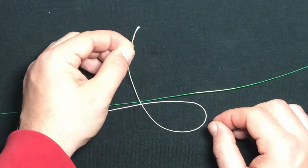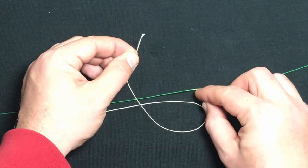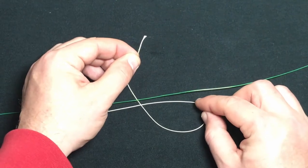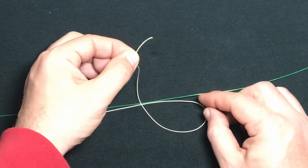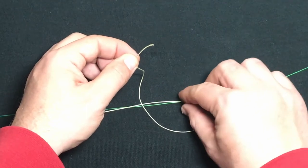We're going to take our first tag end, pinch the main line and upper part of this loop together, and wrap this tag end through that loop about three times.